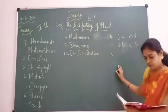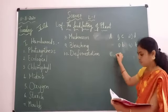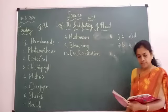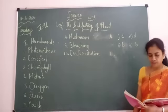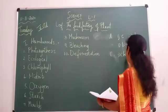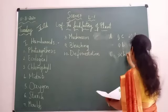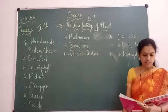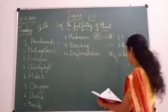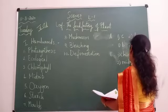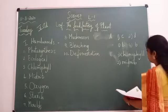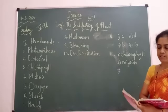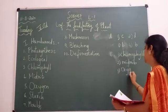Next section is 'Give one term for the following.' Write the answers in your classwork. First: the green substance present in the leaf — answer is Chlorophyll, C-H-L-O-R-O-P-H-Y-L-L. Second: the central part of the leaf is called the midrib — M-I-D-R-I-B. Third: the gas used by green plants during photosynthesis is Oxygen — O-X-Y-G-E-N.